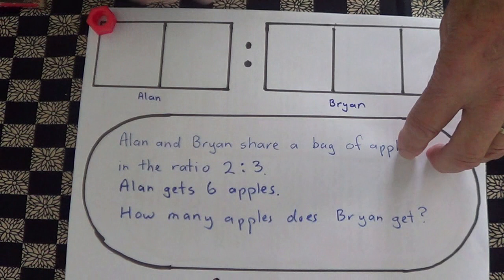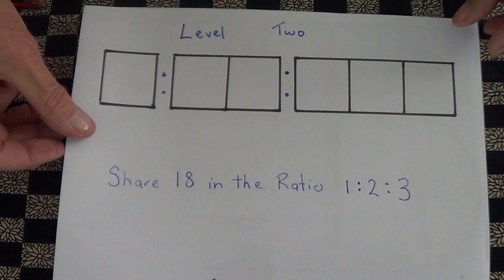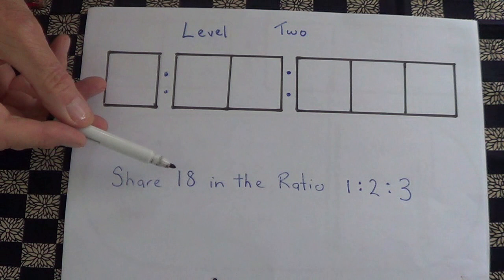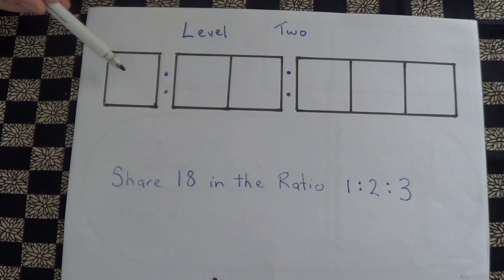I'm going to take you to level two. In level two we use tally marks, and I want to show you how I use tally marks. We've got to share 18 objects in the ratio 1:2:3. There's one box there, two boxes there, and three boxes, so we just start sharing them out.